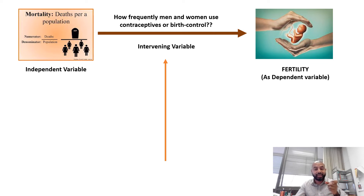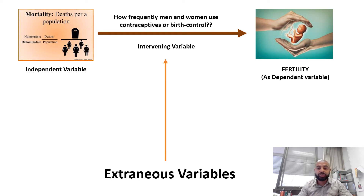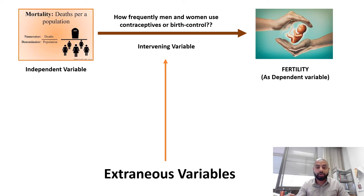The use of contraceptives or birth control by men and women cannot be the only reason children are not being born — there could be other reasons, and that is where extraneous variables come into play. You have to address or account for these in your research to show examiners and reviewers that you are aware of these factors. Extraneous variables are variables that influence the dependent variable but are not the independent variable. You are not trying to establish a relationship between extraneous variables and the dependent variable — you are trying to establish the relationship between the independent and dependent variable, but you must account for extraneous variables to show it was the independent variable causing the change.